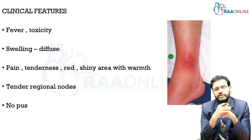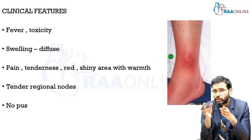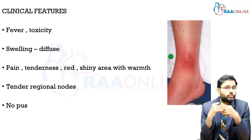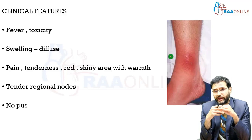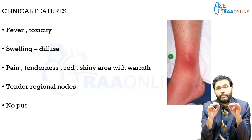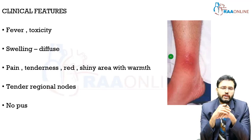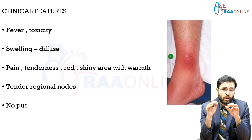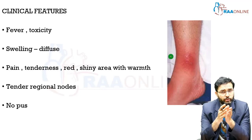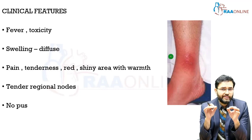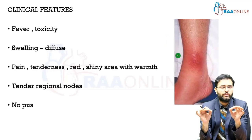Classical clinical features of cellulitis include fever and toxicity. There is a diffuse swelling of the involved area with pain, tenderness, erythema, and the skin over the area is warm and shiny. Due to the infection there is regional lymphadenopathy. In cellulitis per se there is no pus involved; however, once it progresses to a pyogenic abscess, pus formation occurs.